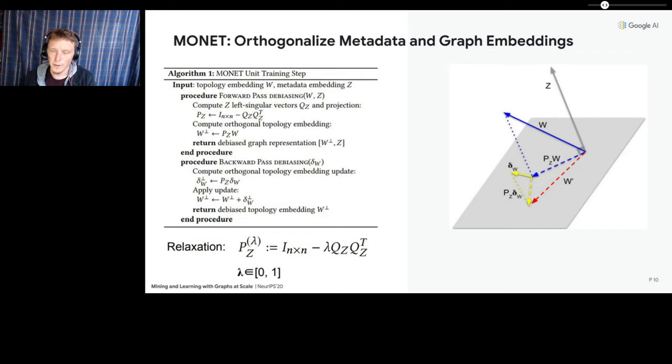And as mentioned before, we introduce a relaxation to MONET which scales the level of the orthogonal projection. As you can see here, when the tuning parameter is equal to one, this corresponds to standard MONET or just complete debiasing, complete projection onto the null space. Then the parameter can be tuned continuously down to zero, which corresponds to no debiasing and is equivalent to the underlying algorithm MONET is operating on.